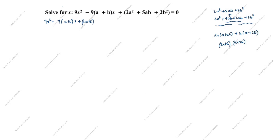Taking (a+2b) as the common factor, we get (a+2b)(2a+b) equals 0. So 2a²+5ab+2b² = (2a+b)(a+2b). Now the equation becomes: 9x² minus 3(3a+b)x plus (2a+b)(a+2b) equals 0.